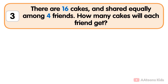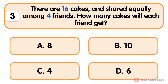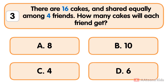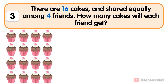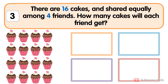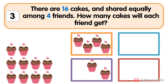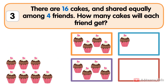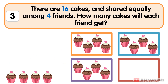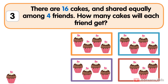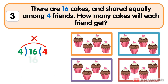There are sixteen cakes to be shared equally among four friends. How many cakes will each friend get? Each friend gets four cakes. Simply solve this by division. The total number of cakes, 16, is divided by the number of friends, four. You will get your answer: four.